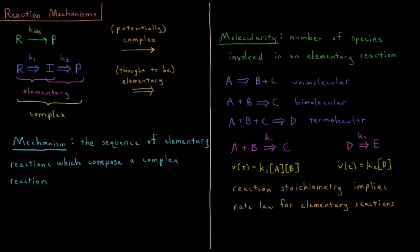From now on in this chapter, whenever we use a single arrow going in a single direction, what we're going to indicate is what we call a complex reaction or something which is potentially complex. It could take place during multiple what we'll call elementary steps.